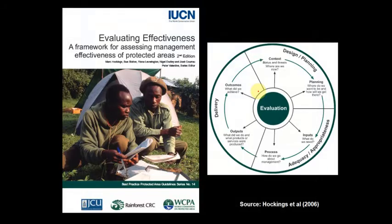Hockings was the lead author of this IUCN approach for evaluating effectiveness of protected areas. Anyone looking at an individual protected area - like the one in Canada or a World Heritage Area in your own country - this is a really easy off-the-shelf framework to use. It's got the policy cycle built in, with elements including evaluation, process, outputs, outcomes, context, planning, and inputs - or design, planning, adequacy, appropriateness, and delivery.